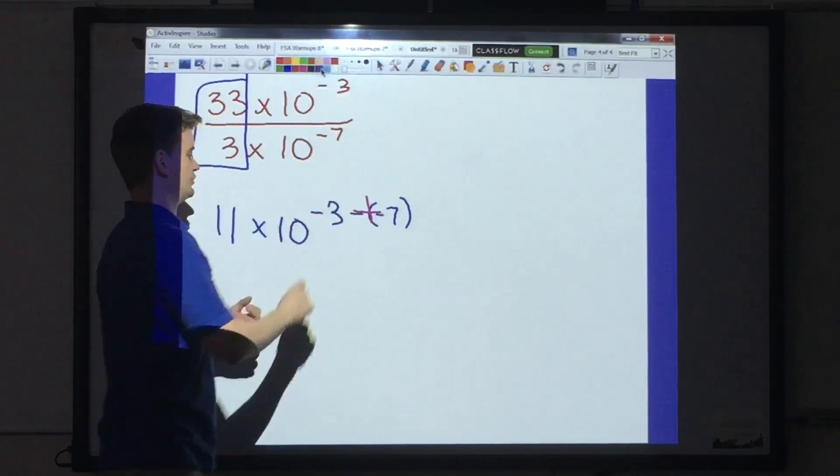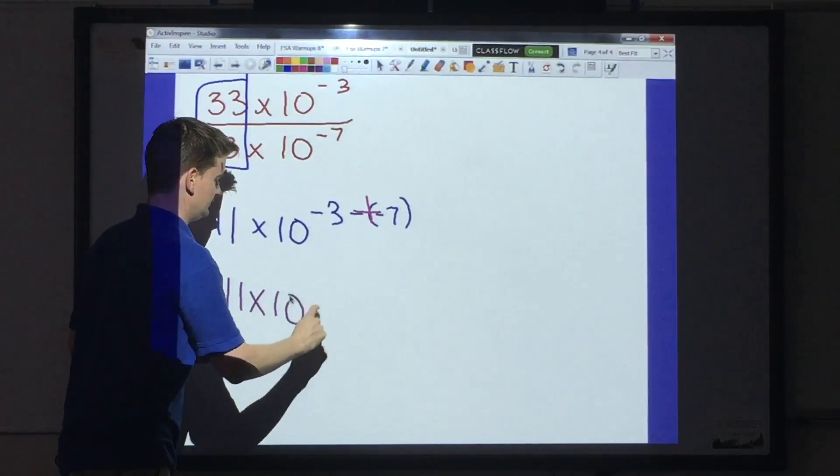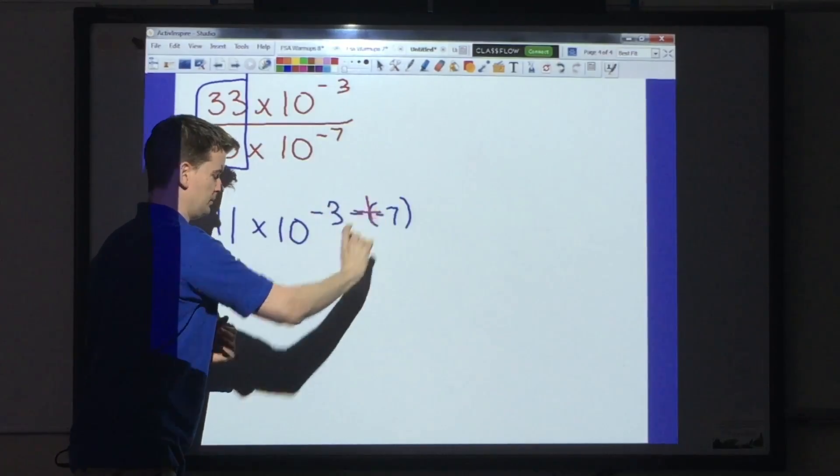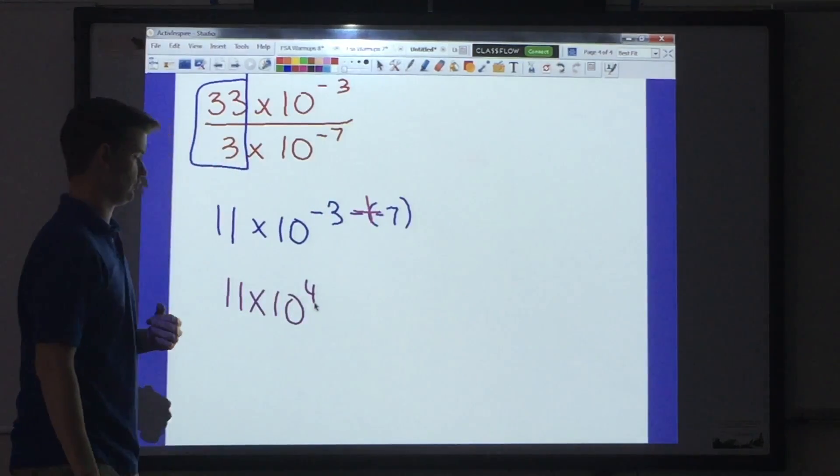And your final answer will be 11 times 10. We do negative 3 plus 7. That gives me the fourth power.